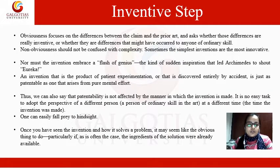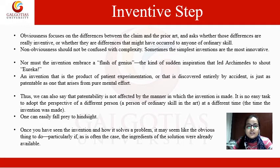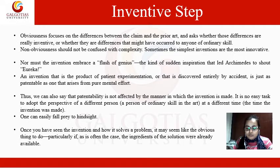Obviousness focuses on the difference between the claim and the prior art. When trying to understand the obviousness of a particular invention, you compare your product with previously available products and ask whether these differences are truly inventive, or whether they are differences that might have occurred to anyone of ordinary skill. Obviousness focuses on the difference between the claims and the prior art.